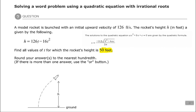The rocket's height h in feet is given by the following model: h equals 126 times t minus 16t squared. We need to find all the values of t — the times — for which the rocket's height is 50 feet.